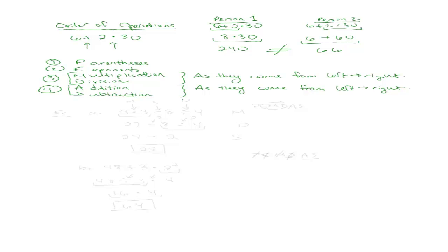Let's go ahead and try this out on a problem. Example A: 9 times 3 minus 8 divided by 4. Before actually doing it, let's quickly identify what operations we have. We have a multiplication, a subtraction, and a division — so an M, an S, and a D. The order we do these really depends on the order of operations, which is PEMDAS.